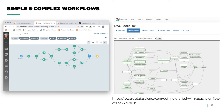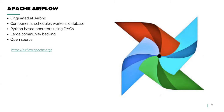Let's look at these two different workflow agents. First, Apache Airflow: originated at Airbnb, has several components — scheduler, workers, and databases — Python-based operators using DAGs, large community backing, and open source.